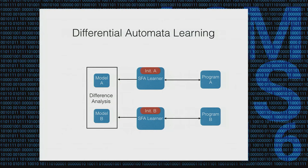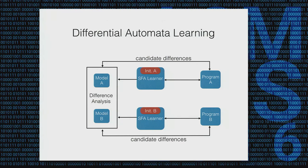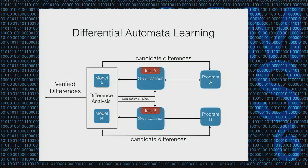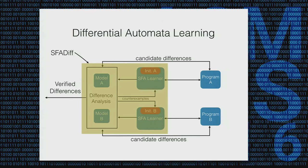We send these candidate differences to the actual programs — I call them candidate differences because the models might be inaccurate. If they turn out to be incorrect guesses, we use them as counter-examples and feed them back to the learning algorithm to update the models. This loop continues until we either cannot find any difference in the models, or we come up with a set of verified differences for further analysis. Our tool SFA-DIF encompasses all these components.